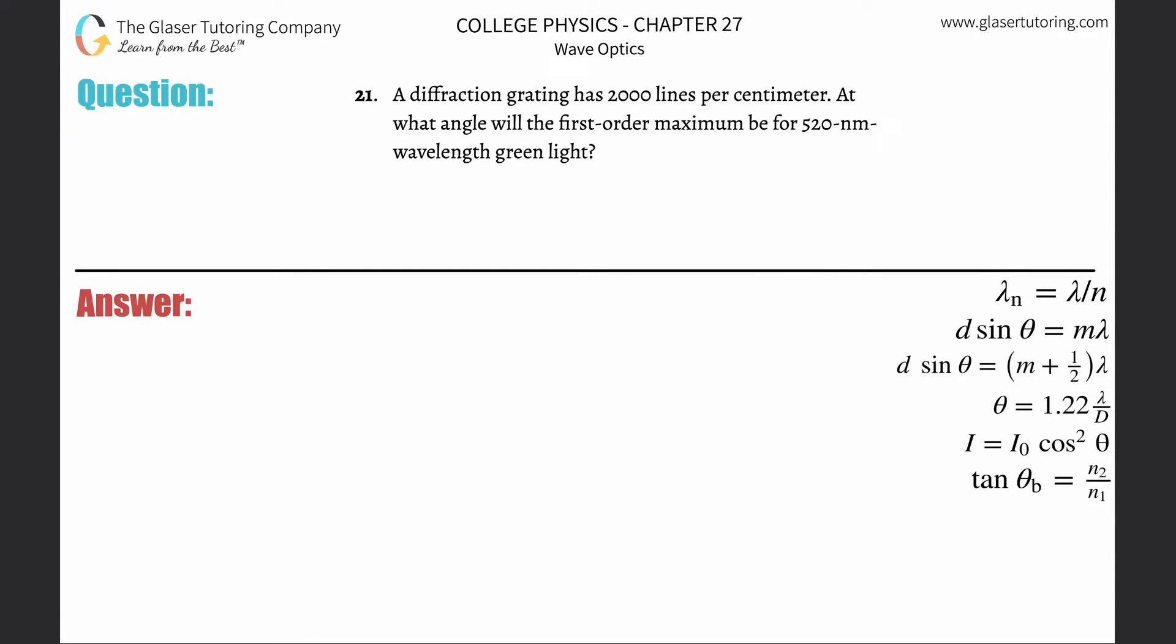Number 21. A diffraction grating has 2000 lines per centimeter. At what angle will the first order maximum be for 520 nanometer wavelength green light?